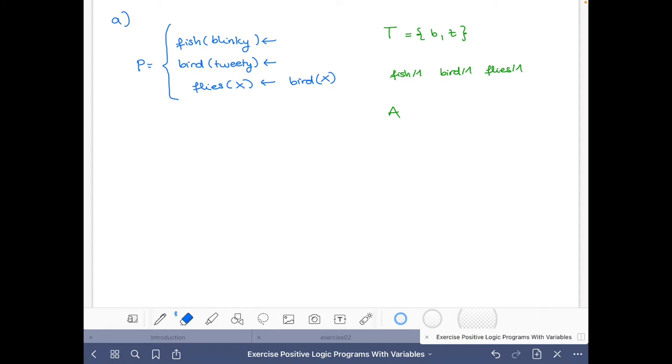Good, let's move on. Then these are the predicates, these are the ground terms that can be constructed with the constant and function symbols of the program. In this case, we have no function symbols, so these are just the constants of the program.